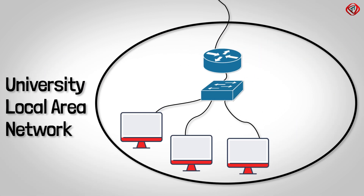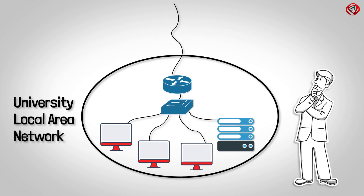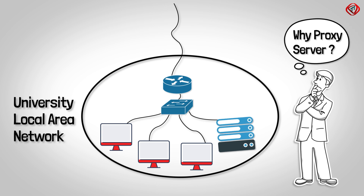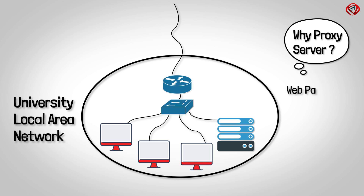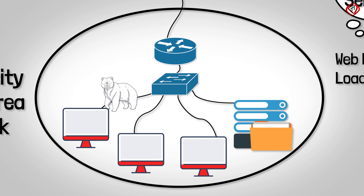A university might install a proxy server on its campus network and set up all campus browsers to use it. There are two main reasons for this. First, it can make web pages load faster for users. This happens when the proxy server already has a copy of the requested data stored in it, so there is no need to travel across the internet to get the data — it is provided directly by the proxy server.